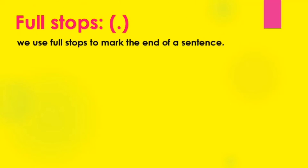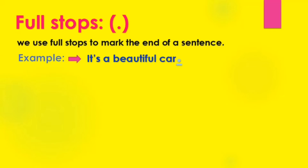Now let's move to full stops — النقاط. We use full stops to mark the end of a sentence — نستخدم النقاط لتحديد نهاية الجملة. Here we have an example: 'It's a beautiful car.' We put a full stop here because it is the end of the sentence.